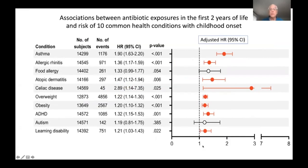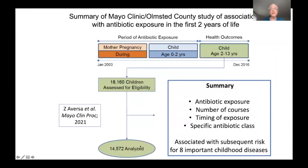To summarize this result: this study showed that antibiotic exposure — including number of courses, timing of the exposure, and specific antibiotic class — were associated with specific subsequent risk for eight important childhood diseases. This complements work where scientists have been looking at single events alone.